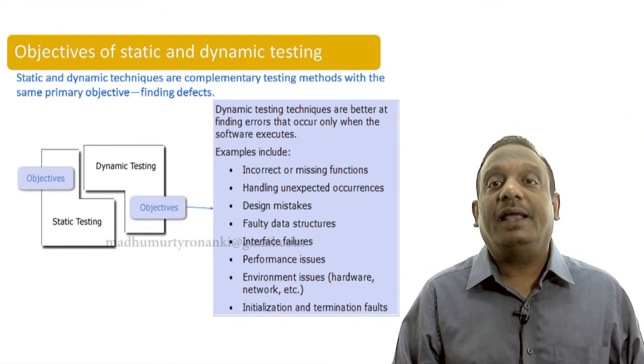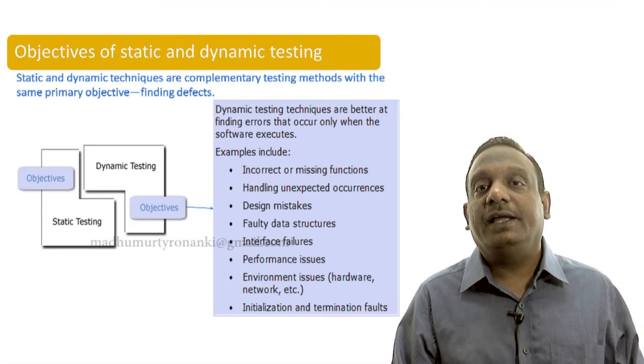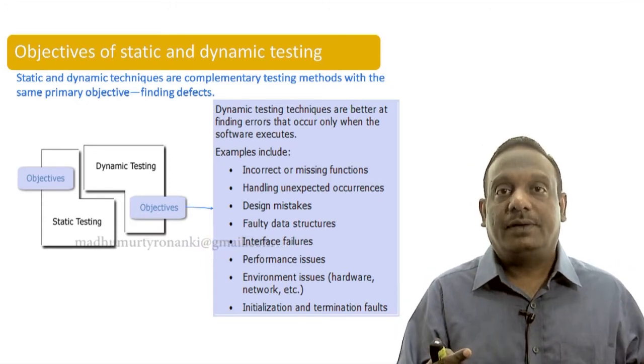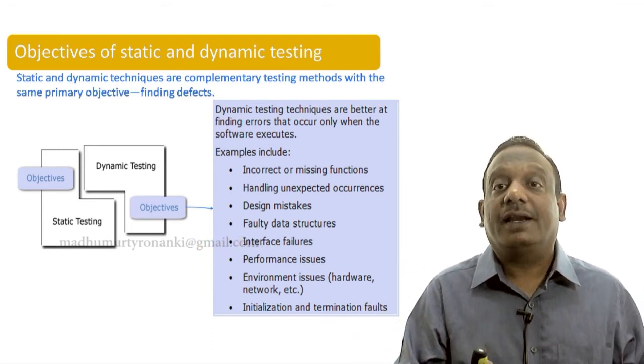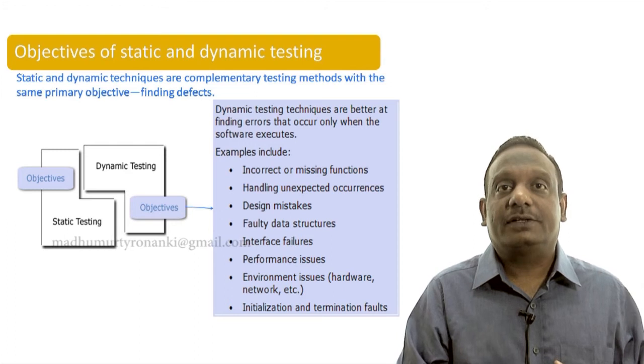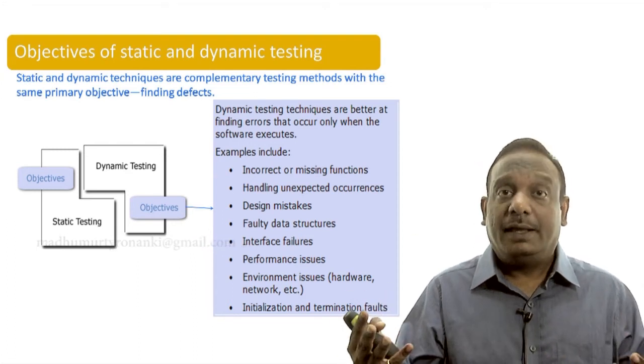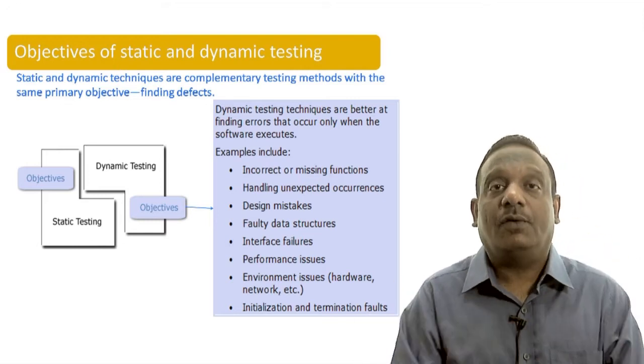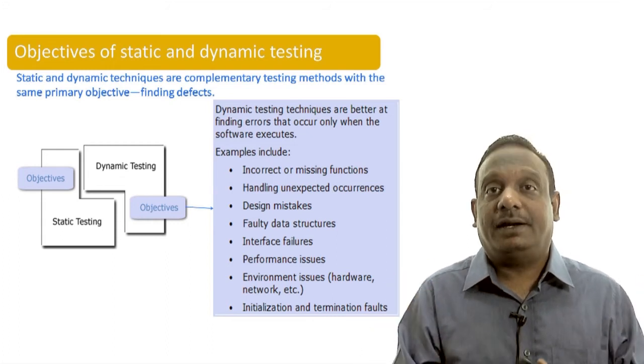On the other hand, dynamic testing techniques are better at finding errors that occur only when the software executes. What are examples of those things? Those are incorrect or missing functions. When it is executing, we can find some functionality is missing. That can be much more easily found by a review but those things can be found by executing code as well.